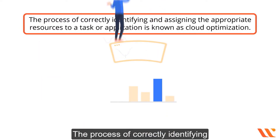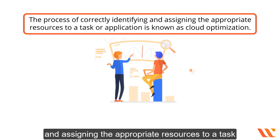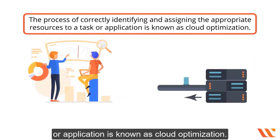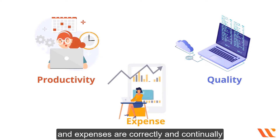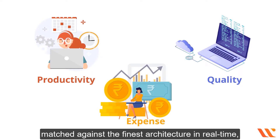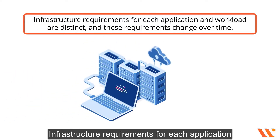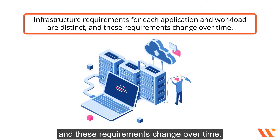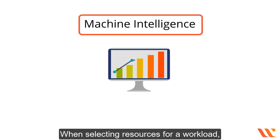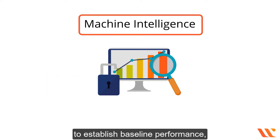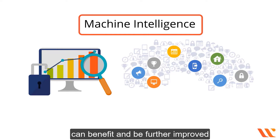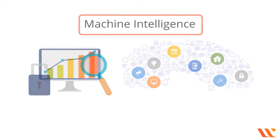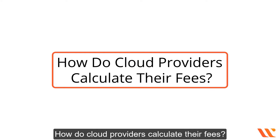Cloud optimization is the process of correctly identifying and assigning the appropriate resources to a task or application. Efficiency is achieved when workload productivity, quality, and expenses are correctly and continually matched against the finest architecture in real-time. Infrastructure requirements for each application and workload are distinct and change over time. Domain knowledge is generally used to establish baseline performance, but all workloads can be further improved using machine intelligence.